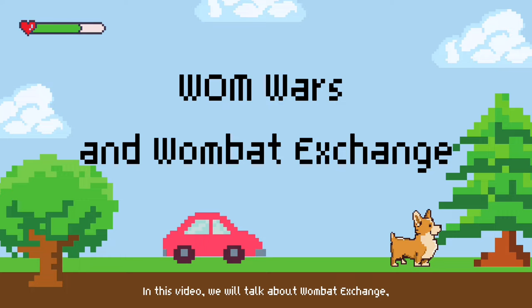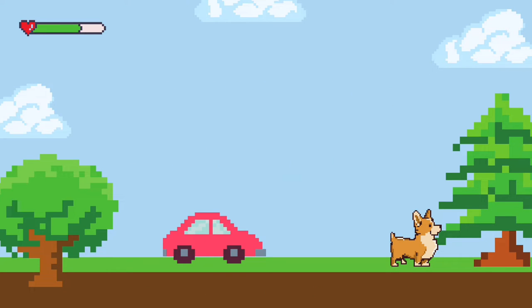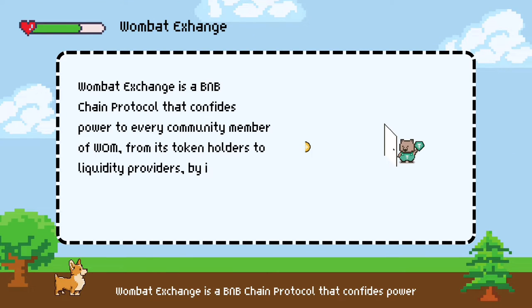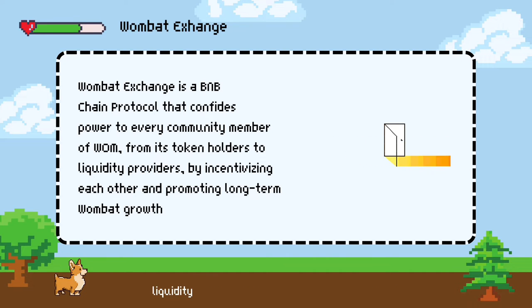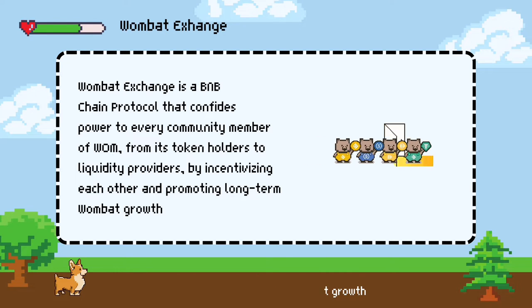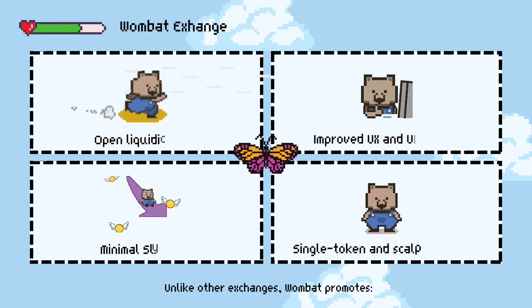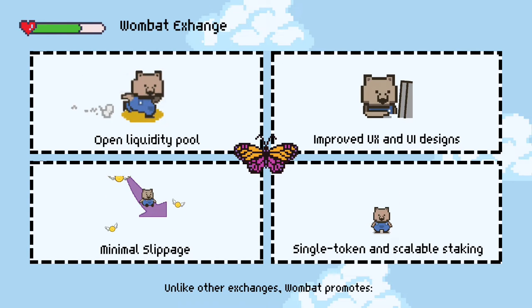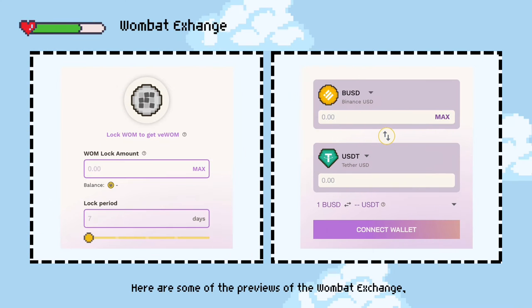In this video we will talk about Wombat Exchange, the groundbreaking multi-chain stable swap, and Wom Wars. Wombat Exchange is a BNB chain protocol that confides power to every community member — from its token holders to liquidity providers — by incentivizing each other and promoting long-term Wombat growth. Unlike other exchanges, Wombat promotes minimal slippage, open liquidity pool, single token, and scalable staking with better functionalities by improving UX and UI designs.